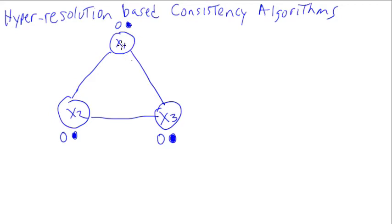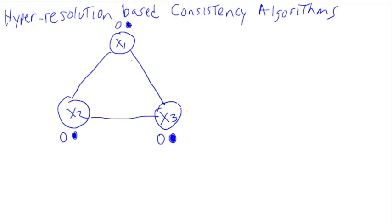Intuitively, you can see the problem: x1 needs to know that if he sets himself to white, these two other variables can't both set themselves to blue at the same time. More generally, for bigger graphs, x1 would need to know about what is no good about the rest of the graph — what things are impossible that x1 should know about.